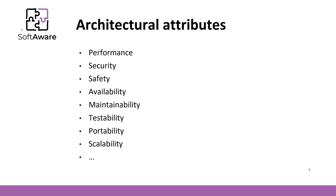For example, if performance is the key attribute, we should choose an architecture that localizes operations to minimize subsystem communication overhead. If the priority is security, we could choose a layered architecture hiding critical assets in inner layers. If safety is very important, we should choose an architecture that allows isolating safety-critical components. If the system needs to be available 24/7, our architecture should include redundant components.